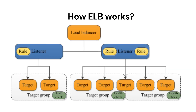Next question: How does ELB work? A load balancer serves as a single point of contact for clients. The load balancer distributes incoming application traffic across multiple targets such as EC2 instances in multiple availability zones, which increases the availability of your application. You can add one or more listeners to your load balancer. A listener checks for connection requests from clients using the protocol and port that you configure. The rules that you define for a listener determine how the load balancer routes the request to its registered targets. Each rule consists of a priority, one or more actions, and one or more conditions. When the conditions for a rule are met, its actions are performed. You must define a default rule for each listener, and you can optionally define additional rules.